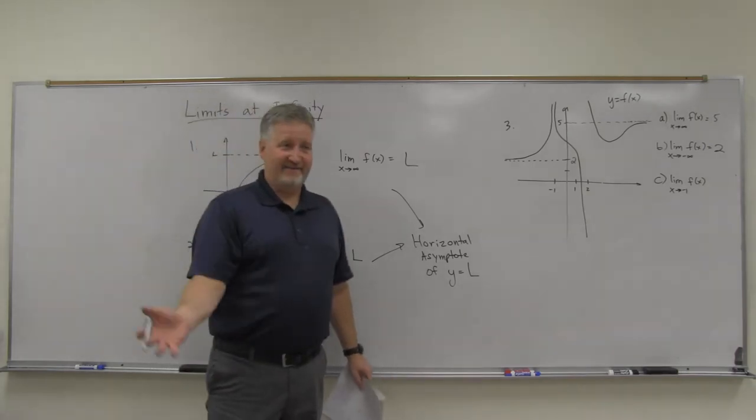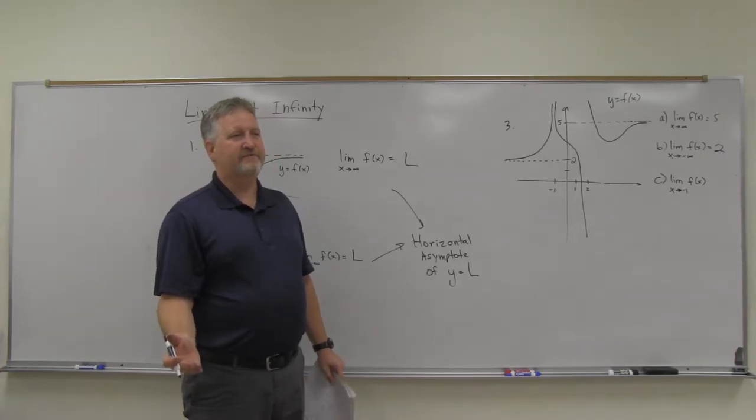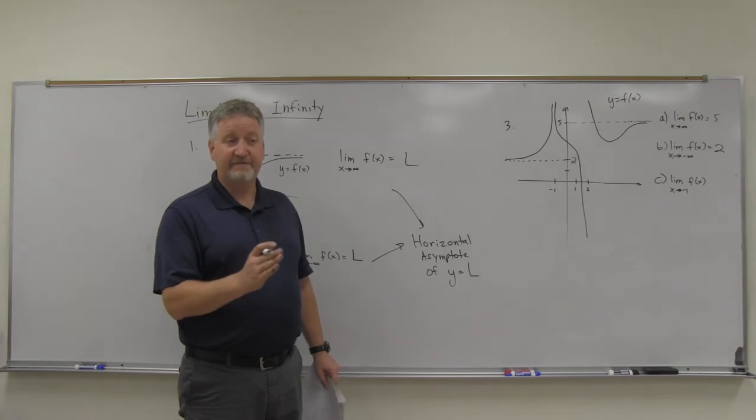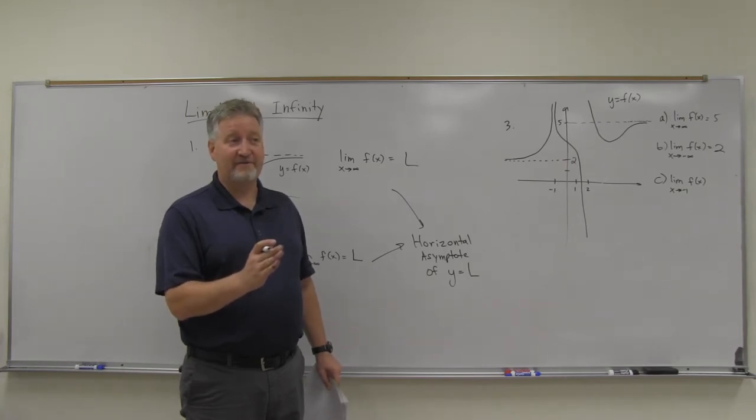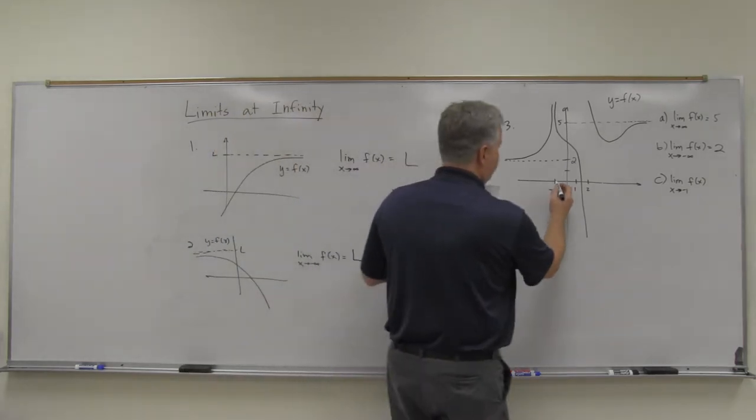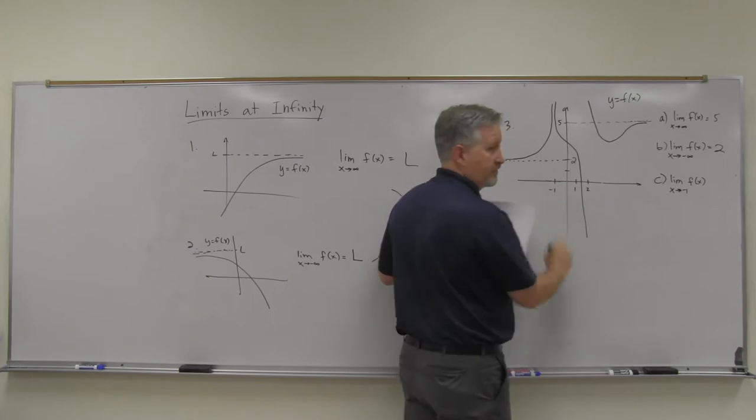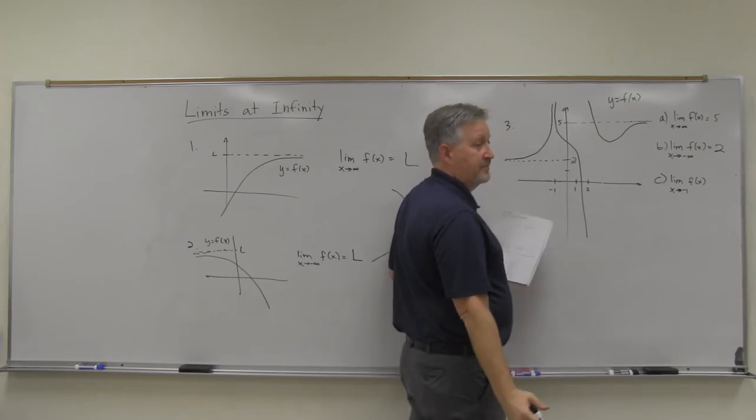Well, that goes back to several days ago. If I'm looking at the limit as x approaches as a number from a graph perspective, remember what we had to do? We had to look from the left and the right. And so from negative one, if as x approaches negative one, I got to look from the left and from the right.